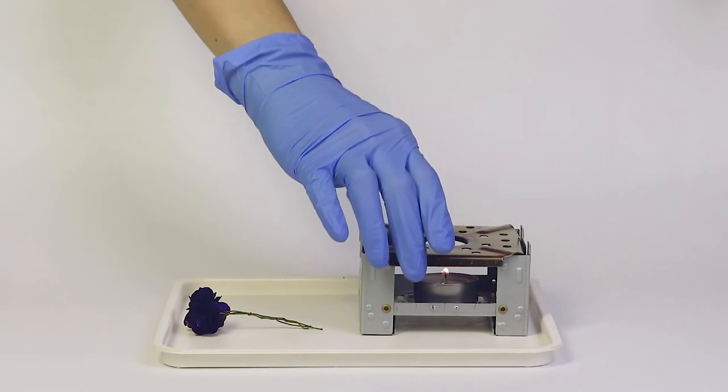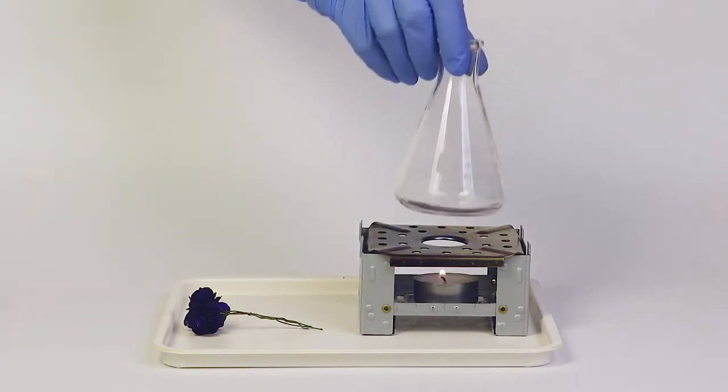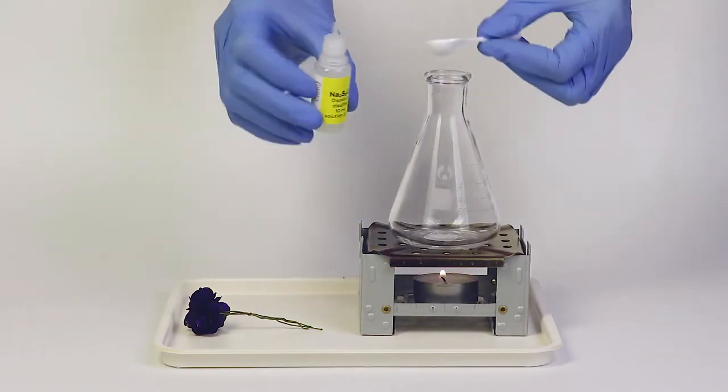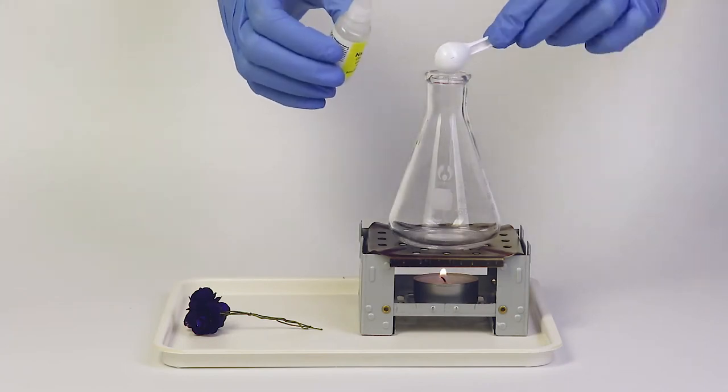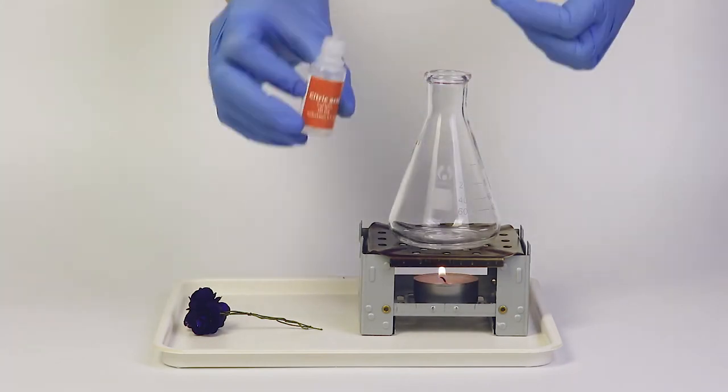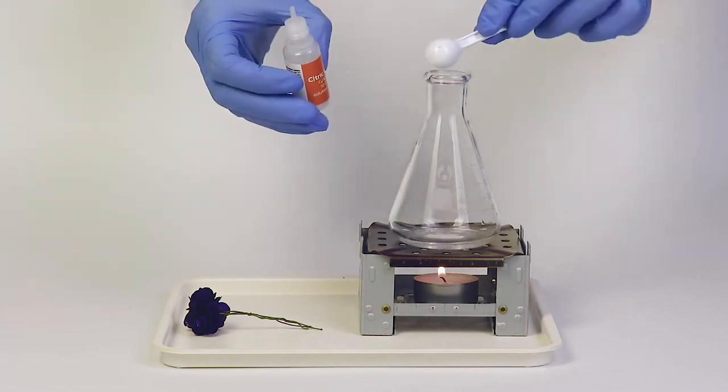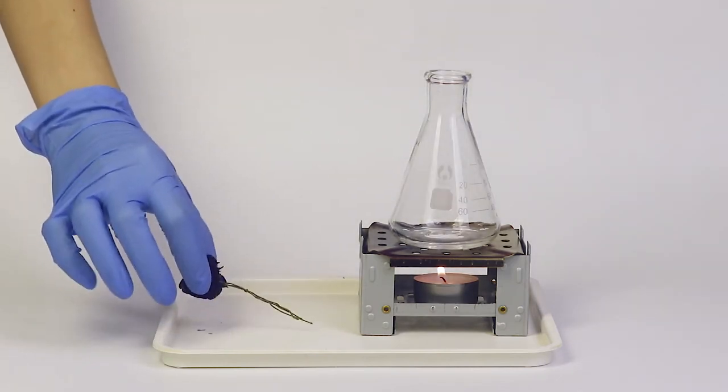Cover the stove with the flame diffuser and set a flask on top. Add into the flask sodium metabisulfite and citric acid solutions, one big measuring spoon of each. Put the flowers in the flask.